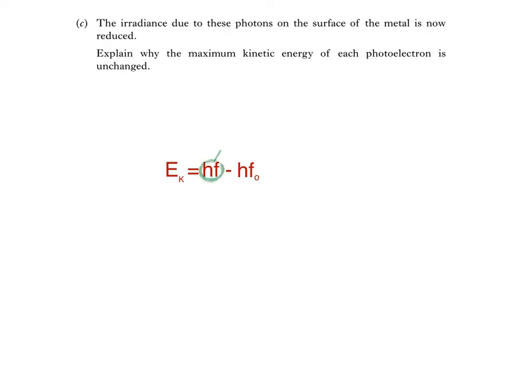then the energy of each photon, HF, will also be constant. Since the metal is not changing, the work function would also be constant, meaning that the maximum kinetic energy of each photoelectron is unchanged. We could write something like this: